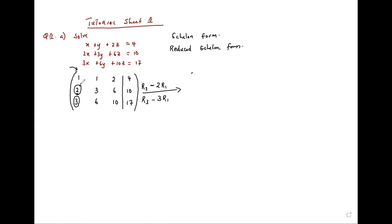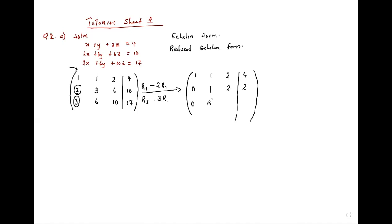Since we used row one to reduce the other two, we don't need to touch it. Row one is fixed: 1, 1, 2, 4. Then row two minus two times row one: 2 minus 2 is zero, 3 minus 2 is one, 6 minus 4 is two, 10 minus 8 is two. Then row three minus three times row one: 3 minus 3 is zero, 6 minus 3 is three, 10 minus 6 is four, 17 minus 12 is five.